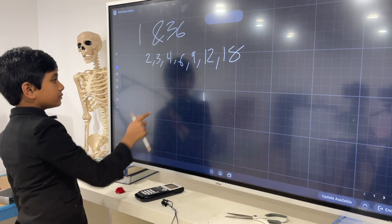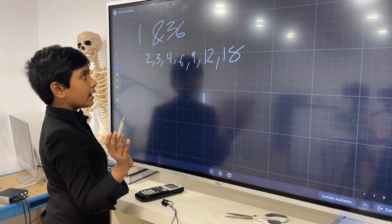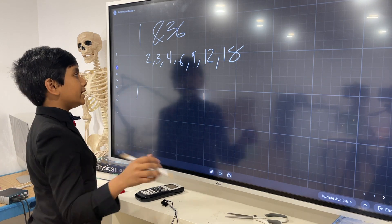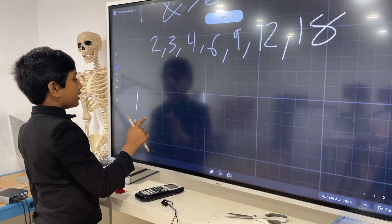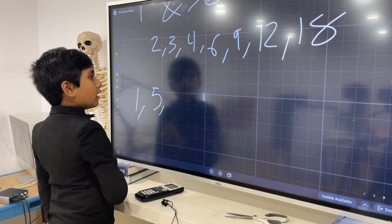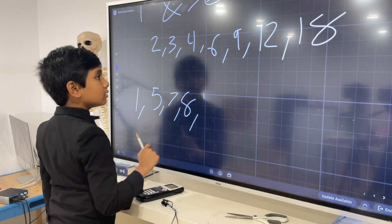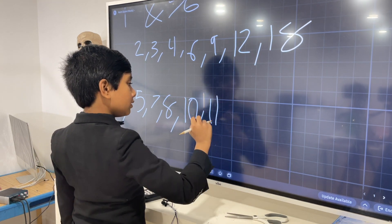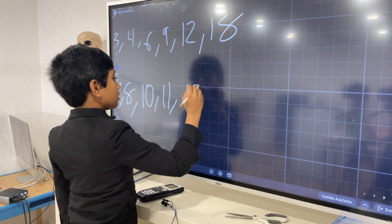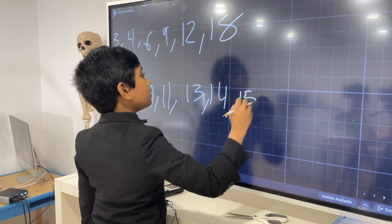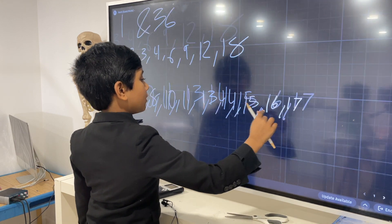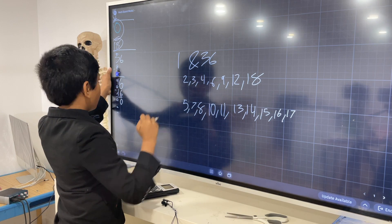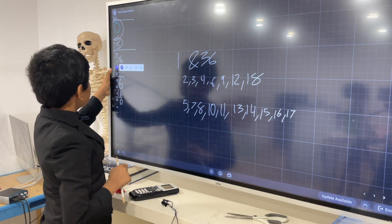So now let's see. Let's test all of the numbers that are below 18 that we haven't already. So we haven't tested 1, we haven't tested 5, 7, 8, we haven't tested 10 or 11, we haven't tested 13, 14, 15, 16, or 17. So these are all the numbers we need to test. Well, first of all, we already know that 1 will always be a factor, so we can eliminate that.